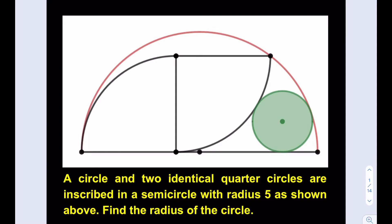So we have a circle here and two identical quarter circles. They're all inscribed in the semicircle with radius 5 as shown. Find the radius of the circle. We are supposed to find the radius of the quarter circles first but I'm just going to skip that part and share the puzzle and my solution down below.